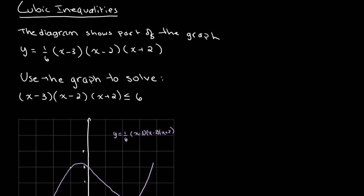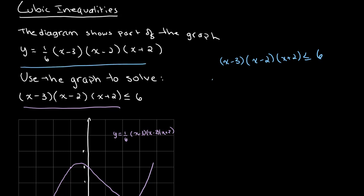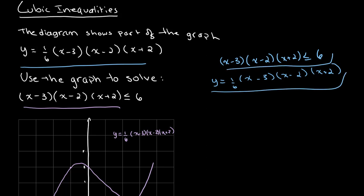Right off the bat you probably notice that the inequality (x − 3)(x − 2)(x + 2) ≤ 6 does not match the equation we're given. Our equation is y = (1/6)(x − 3)(x − 2)(x + 2). So if our inequality doesn't match our graph, then we can't really solve for it directly.